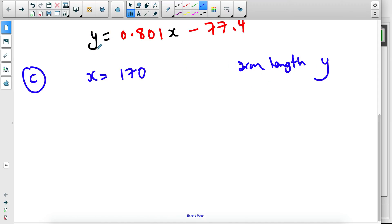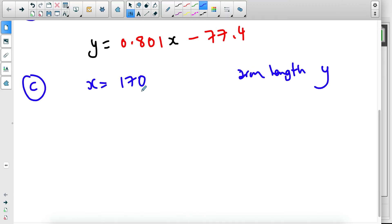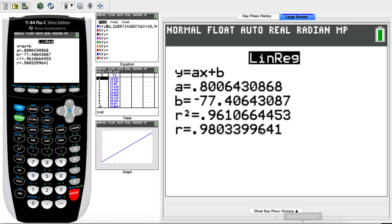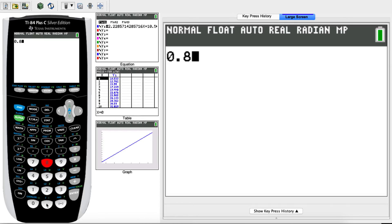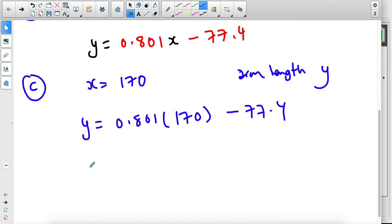Well, we have a nice way of writing y, which is this equation, which means all you have to do is do substitution. So y equals 0.801, open brackets, 170 minus 77.4. You plug this in the calculator, and it should give you 0.801, 170 minus 77.4. Make sure you put the brackets in there, and make sure you write the accurate numbers.